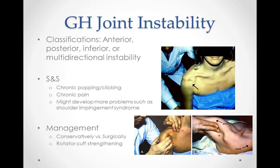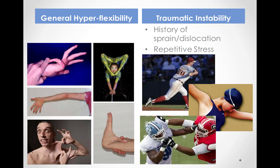Instability can also follow less severe shoulder injuries. Common signs and symptoms include chronic popping or clicking, chronic pain, and patients may develop more problems such as shoulder impingement syndrome. Management can be conservative or surgical depending on the amount of joint instability. Rotator cuff strengthening exercises can also assist with stabilizing the shoulder joint. Note that hyperflexibility is different than traumatic instability. Joint hypermobility means some or all of a person's joints have an unusually large range of movement. People who do repetitive motions, such as baseball pitchers, volleyball players, and swimmers, may gradually stretch out a joint capsule.